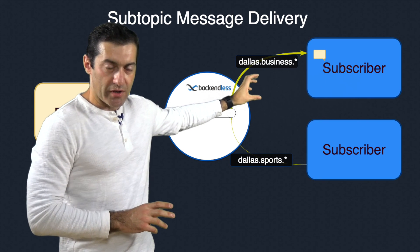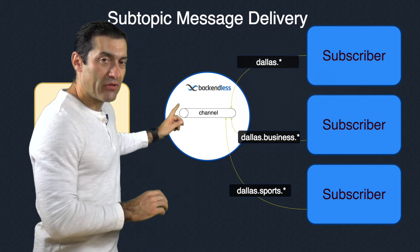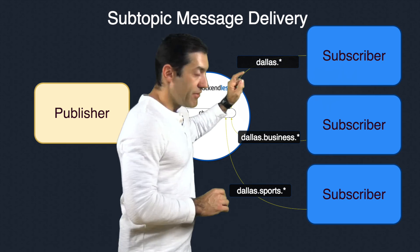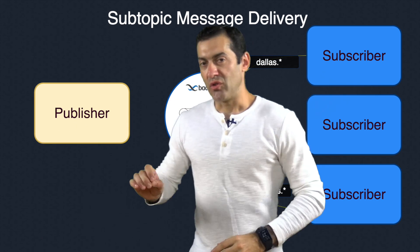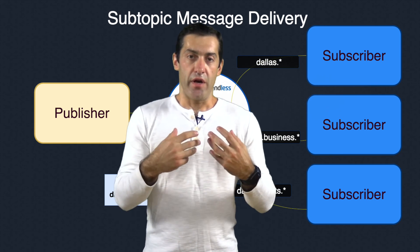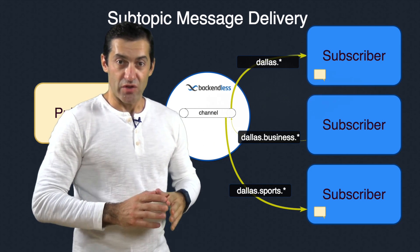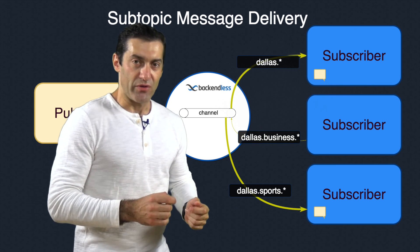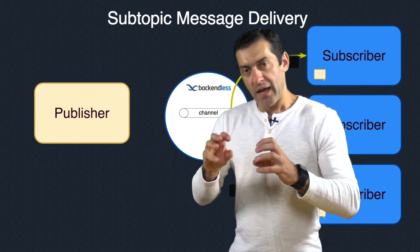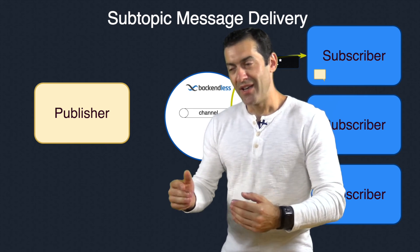Now suppose a third subscriber registers to receive messages sent to subtopic Dallas.Star. In this case, any new messages sent from that point on will be delivered to that third subscriber as well. For example, a message sent to Dallas.Sports.Mavericks would be received by two subscribers: the one subscribed to Dallas.Star, which matches the pattern for Dallas.Sports, and the one subscribed to Dallas.Sports.Star. This way, you can structure your application where subscribers express interest in a pattern-matching system, with patterns applied to subtopics designated by publishers.